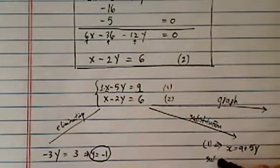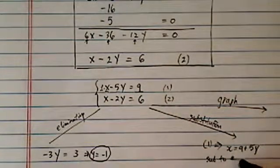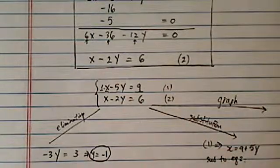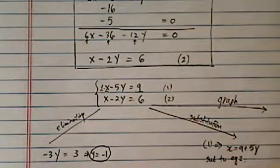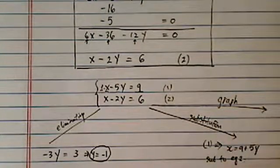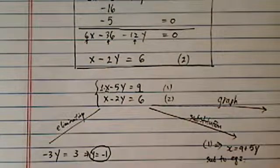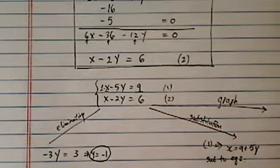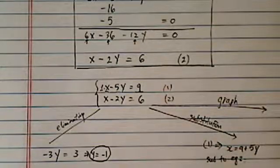Now, I'm going to substitute to equation 2. Every time I see x, I'm going to have 9 plus 5y minus 2y equal to 6. I've got the 3y here equal to minus 3, and then y equal to minus 1.